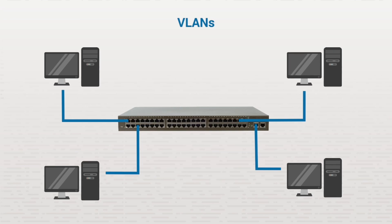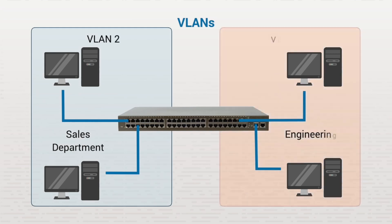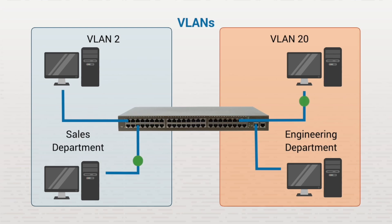Let's keep it simple and say that you want a VLAN for the sales department and a VLAN for the engineering department. You can create a VLAN for each department by assigning the hosts in the sales department to VLAN 2 and the hosts in the engineering department to VLAN 20. This isolates each department's hosts to their own virtual network, meaning they won't see the traffic from the other's VLAN. Each VLAN will also have their own MAC address table in this case.